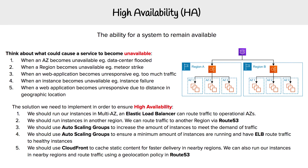What happens if we have an instance that becomes unavailable due to instance failure — something with the hardware or virtual software is failing, and it's no longer healthy? That's where auto scaling groups come in. We set the minimum number of instances — let's say we always need three running at minimum. If one fails, it's going to spin up another one. The load balancer would also route traffic to other instances in other AZs, so we maintain high availability.